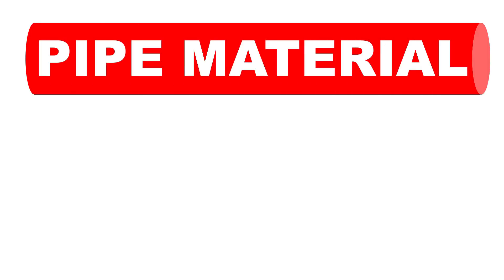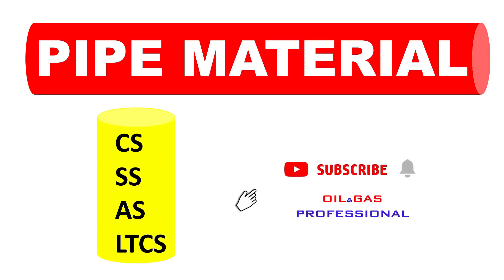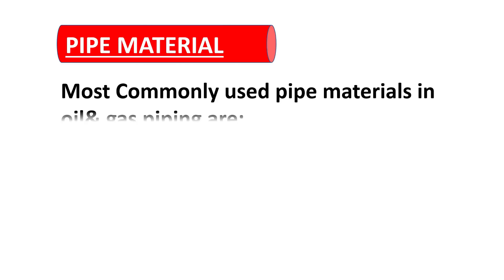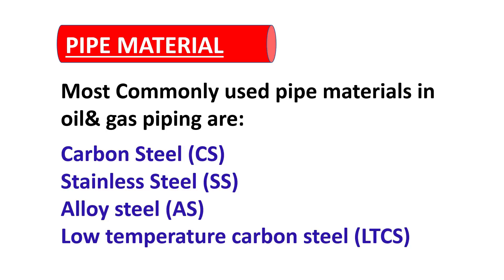Most commonly used pipe materials in oil and gas piping are carbon steel, stainless steel, alloy steel, and low temperature carbon steel — abbreviated as CS, SS, AS, and LTCS.